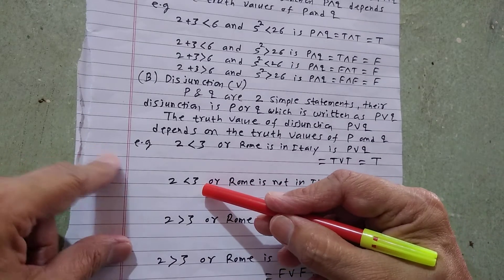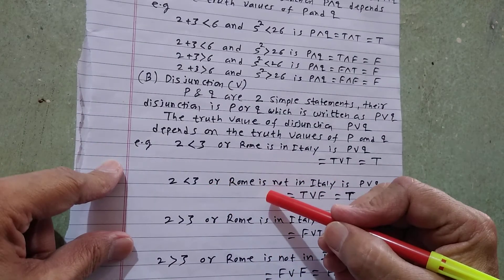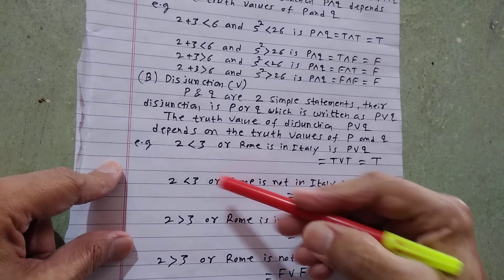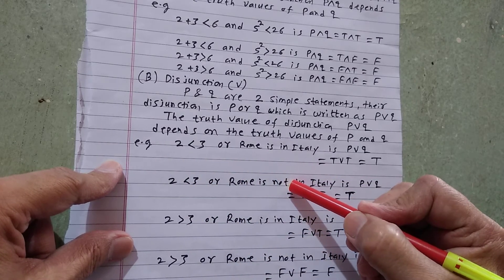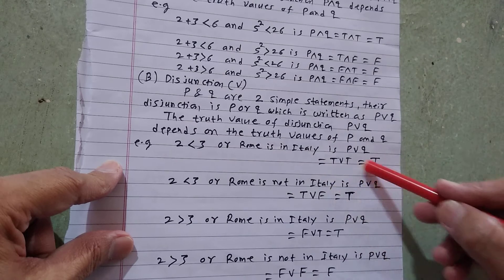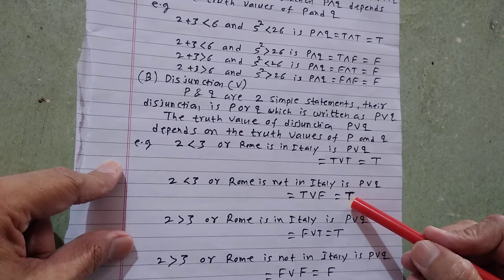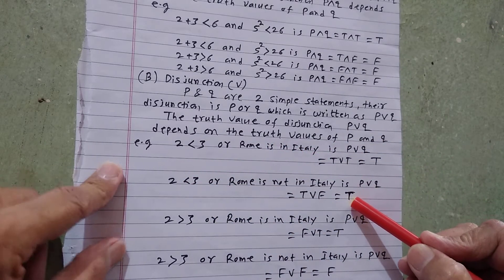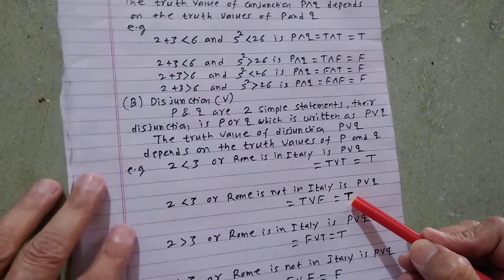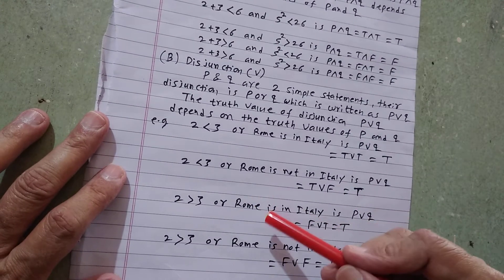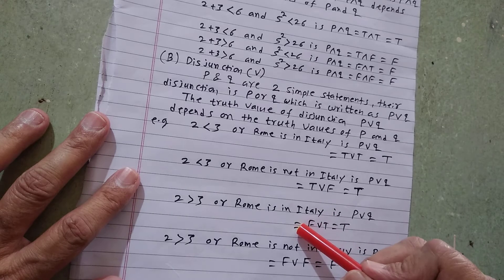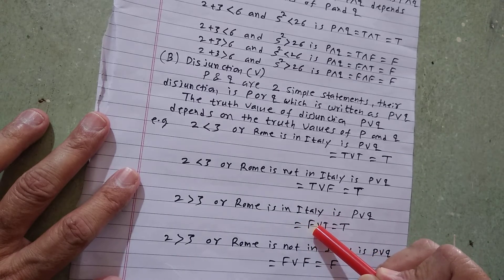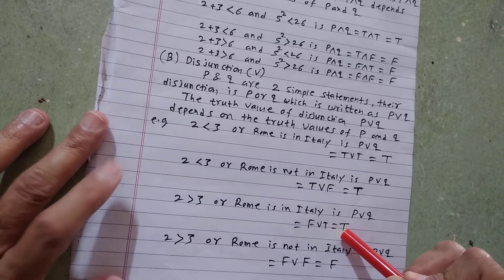Next: '2 less than 3' OR 'Rome is not in Italy'. The first statement is true, the second statement is false. But the combined result of the statement is true — true OR false equals true. Then '2 greater than 3' OR 'Rome is in Italy': '2 greater than 3' is false, and 'Rome is in Italy' is true. Therefore false OR true equals true.